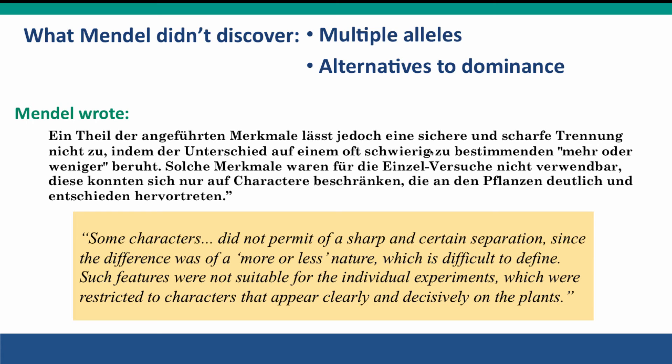Mendel didn't discover that a gene could have more than two alleles, and he didn't discover alternatives to dominance. In his work he concluded there were two alleles — one dominant and one recessive. The reason he didn't discover more complexity was that he was very careful to work only on situations he could clearly analyze. He explicitly said that some characters he tried to study didn't give clear distinctions between phenotypes — tall plants, short plants, yellow peas, green peas. If a trait just kind of blended between types, he set it aside as not suitable. So he didn't discover the situations we now know make real alleles much more complicated than the ones he studied.